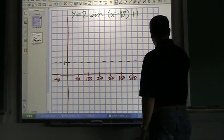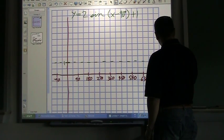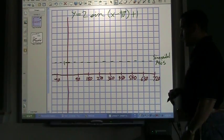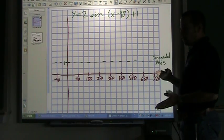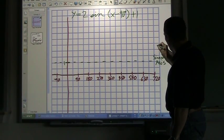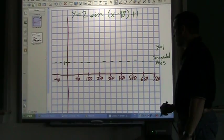So what I do is I draw a dotted line for my sinusoidal axis. So that's the new middle of the graph. It's moved up one.